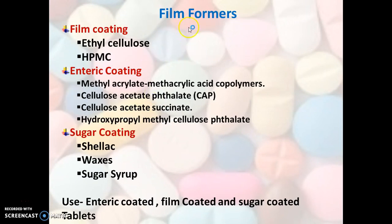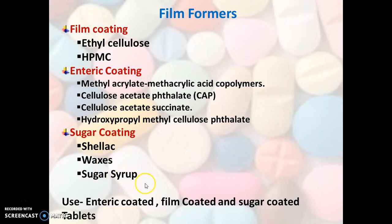Film formers are used for film coating purposes — for example, ethyl cellulose and HPMC. For enteric coating, where dissolution of a tablet at intestinal pH is desired, examples are methyl acrylate methacrylic acid copolymer, cellulose acetate, and hydroxypropyl methylcellulose succinate. For sugar coating, which provides protection and masks taste, agents such as shellac, waxes, and sugar syrup are used.